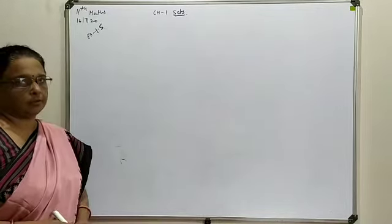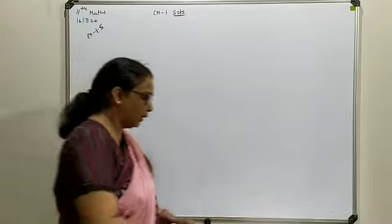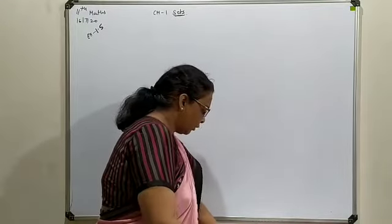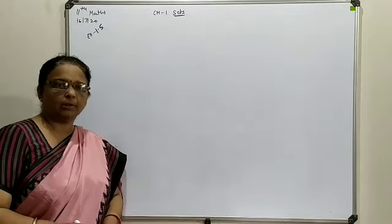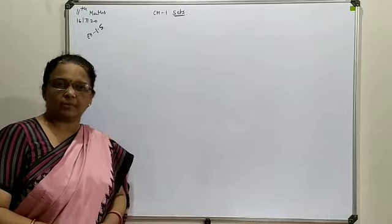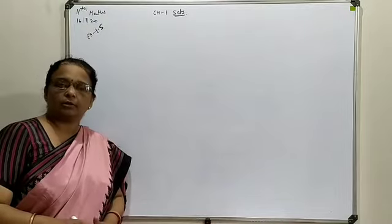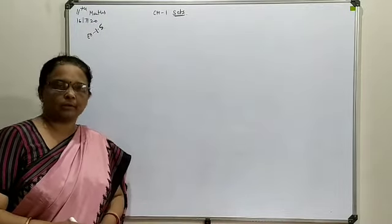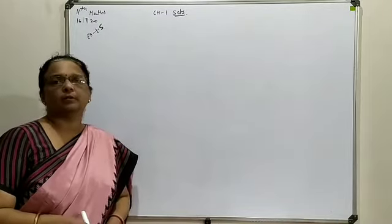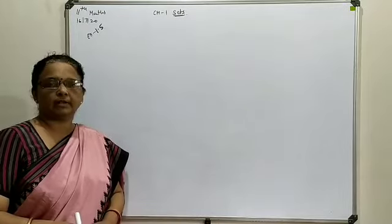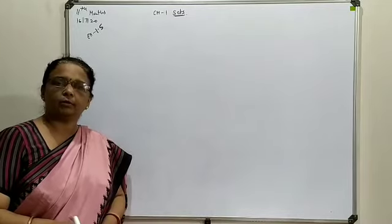We had attended the first question in which combinations were generated in complement form. Now, we are going to look at question number 3, in which various combinations are written in the form of a property, and that complement form we have to write with respect to the given information. This type of question can be attended in two ways: either write the solution as a complement in set-builder form, or based on the given property, generate a list of elements and then write the respective complement set.